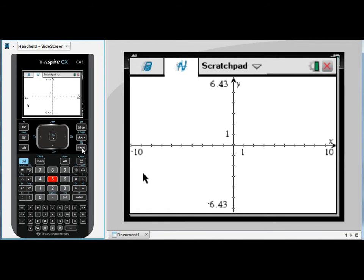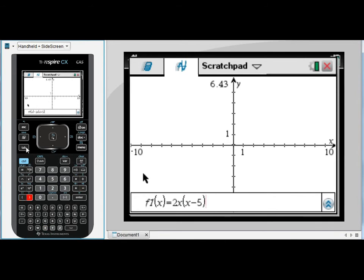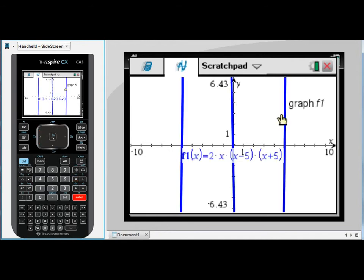Let's just have a look at one more function. So again tab to open my entry line, I'm going to draw a cubic so 2x times (x - 5) times (x + 5). Now one thing you'll note here, and if you've watched some of the earlier videos you'll have seen a discussion around implied multiplication, we will need to tell it that we mean multiplication here.